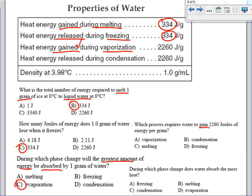During which phase change does water absorb the most heat? If it's absorbing, it's gaining the most heat. It's going to be evaporation.